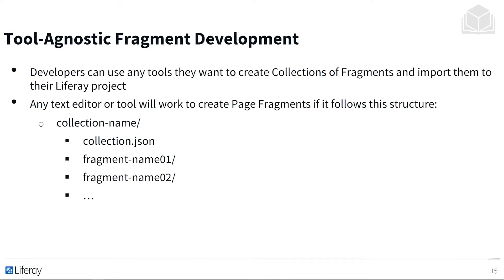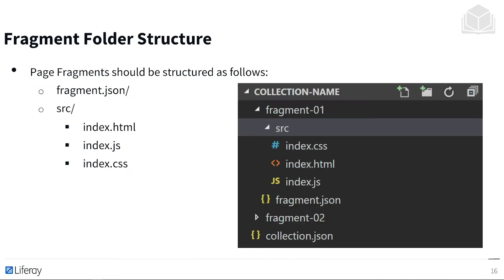The required structure includes: collection name, collection.json, fragment name one, fragment name two, etc. We have an example here showing fragment.json, a source folder containing index.html, index.js, and index.css — demonstrated in the graphic on the right. Really simple — just a few rules to adhere to in order to get our code into the platform.